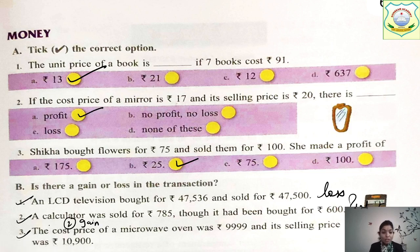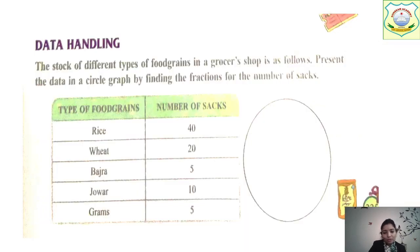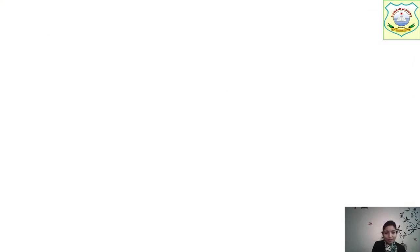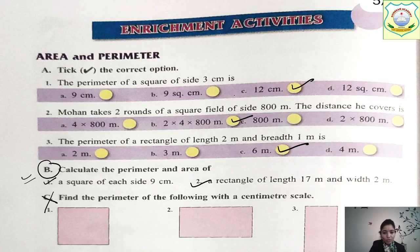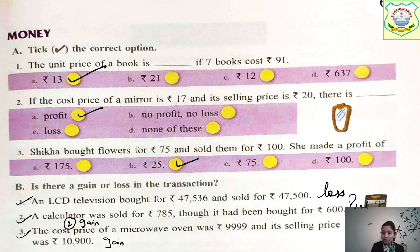The third: a microwave oven with cost price ₹9,999 and selling price ₹10,900. SP is clearly greater than CP, so it is a profit or gain. So: first is loss, second is gain, and third is also gain. You can also find out the exact loss or gain amount by subtracting.